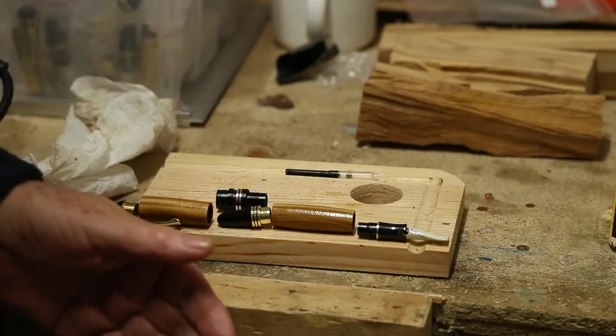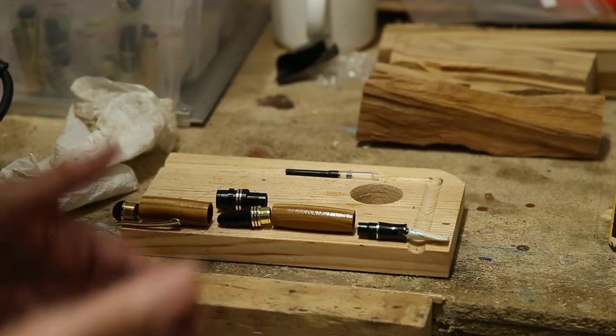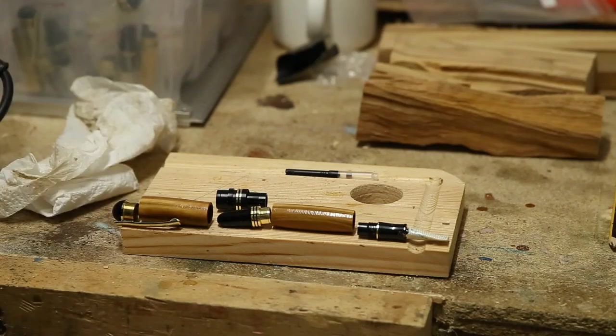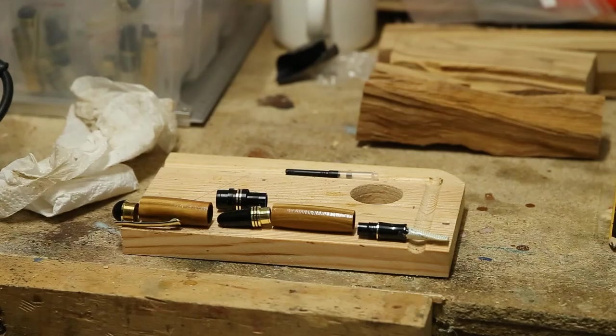All you do is you put them in the vise, twist the vise up and it squeezes them together. Just have to be careful that you don't misalign the pieces with the brass tubes. Otherwise, it'll give you all sorts of problems.